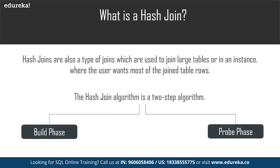The third question is: what is a hash join? Hash joins are used to join large tables or when the user wants most of the joined table rows. The hash join algorithm is a two-step algorithm with a build phase and a probe phase. In the build phase, you create an in-memory hash index on the left side of input. In the probe phase, you go through the right side of input each row at a time and find matches using the index created in the build phase.